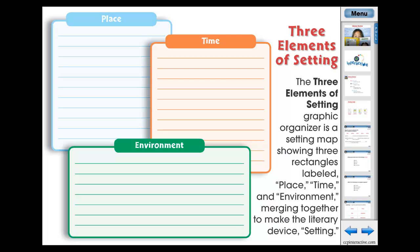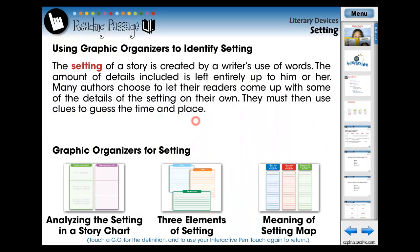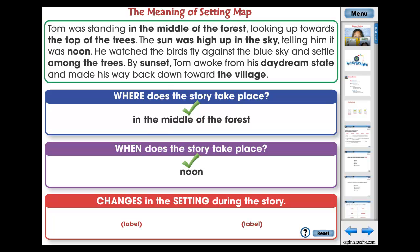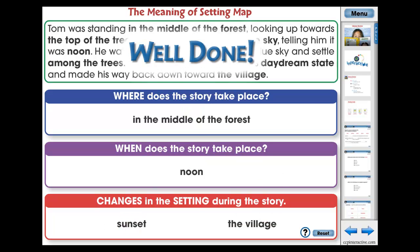Touch a graphic organizer to enlarge and complete it with the interactive pen. Touch again to return. The setting map graphic organizer is an engaging app to support the comprehension of the content in the reading passage. Students are given a paragraph with several sections highlighted and must complete the graphic organizer to successfully identify the setting.